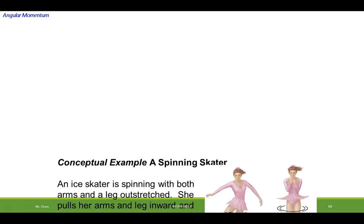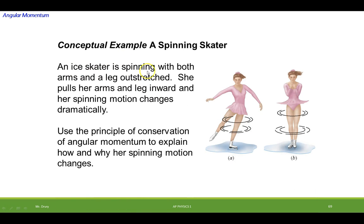Let's look at an example of that. An ice skater is spinning with both arms and legs outstretched. She pulls her arms inward and her spinning motion changes dramatically. How can we explain that using the conservation of angular momentum? Well, when she's spinning she has a low angular speed but a high moment of inertia. If momentum is conserved as she brings her arms in, I gets smaller so the speed has to go up. That's a very simple example of conservation of angular momentum.